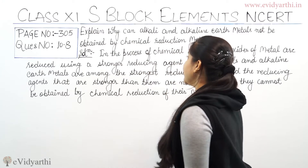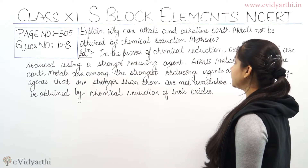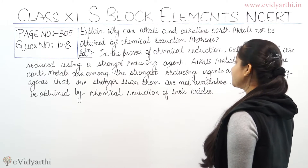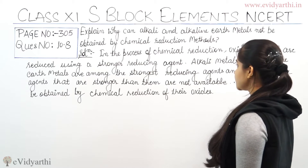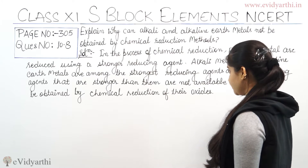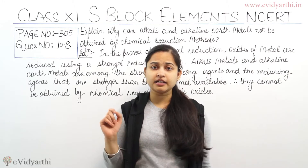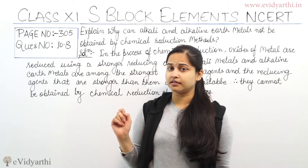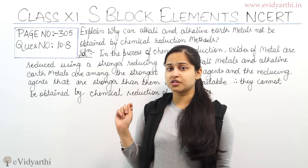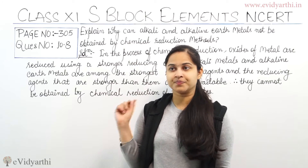Question is: explain why can alkaline earth metals not be obtained by chemical reduction method. The question asks why alkaline earth metals cannot be obtained through the chemical reduction process.